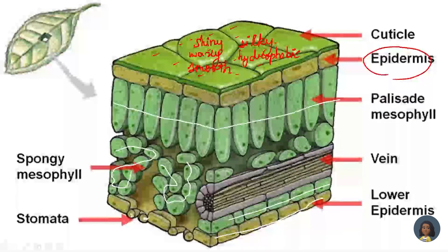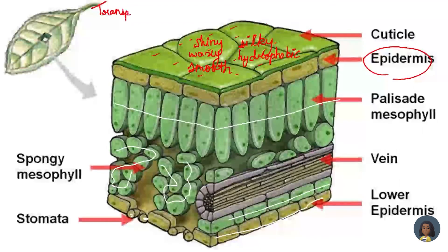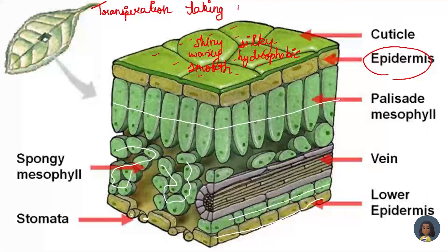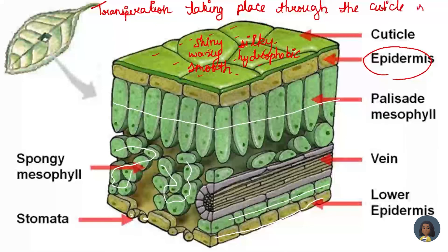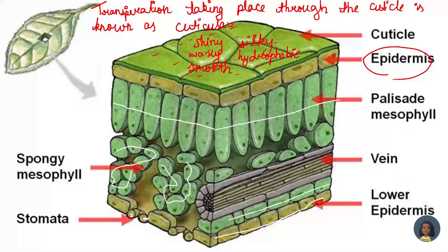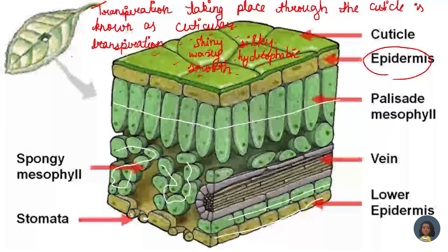Transpiration taking place through the cuticle is known as cuticular transpiration. The most important term to remember is hydrophobic. This is as simple as that — transpiration taking place through the cuticle is known as cuticular transpiration.